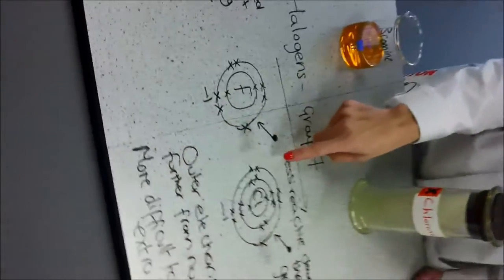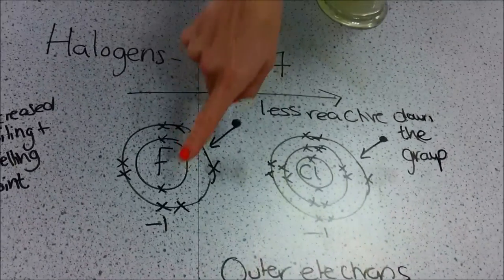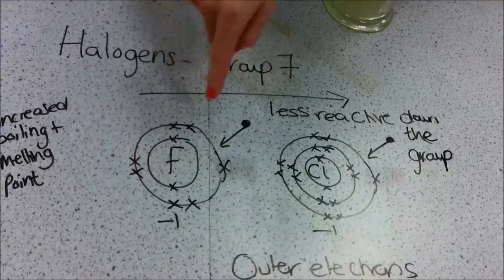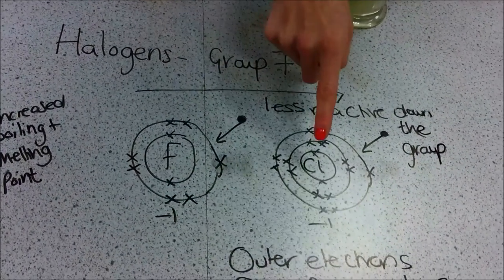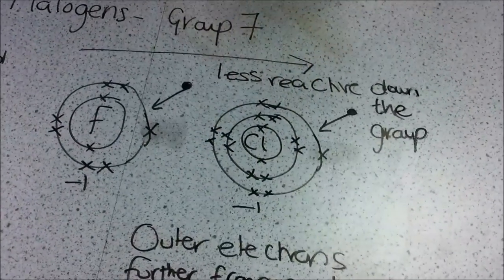Why, I hear you ask. So, let's have a look at their electron structure. Here we have fluorine, 2 on the first shell, 7 on the outer shell. Chlorine, 2 on the first shell, 8 on the next shell, 7 on its outer shell.